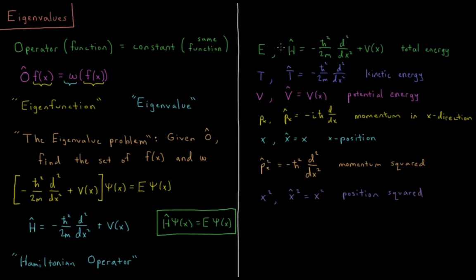The components of the Hamiltonian are two other operators: H equals T plus V. The kinetic energy operator T is negative h-bar squared over two times mass times the second derivative with respect to x. The potential energy operator V of x just multiplies times V of x. Kinetic plus potential equals the total, so that's why our kinetic energy operator takes this form.